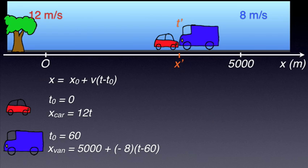In order to find out when and where the two vehicles meet, we put the condition that the x-coordinate of the car is equal to the x-coordinate of the van.